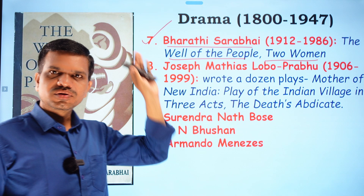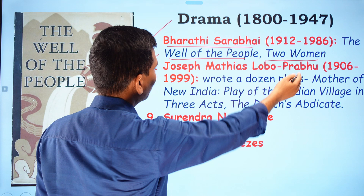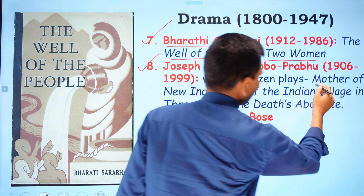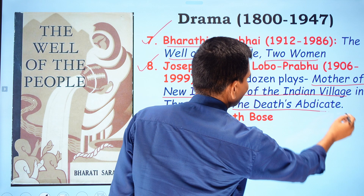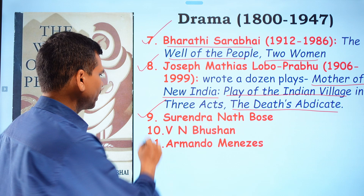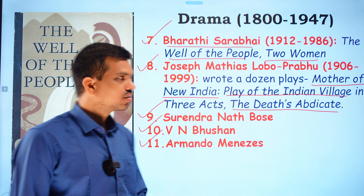Joseph Matthias Lobo Prabhu wrote a dozen plays, among them Mother of New India, Play of the Indian Village in Three Acts, and The Deaths Abdicate. Other notable playwrights of this period include Surendranath Bose, Vian Bhushan, and Armando Menezes.